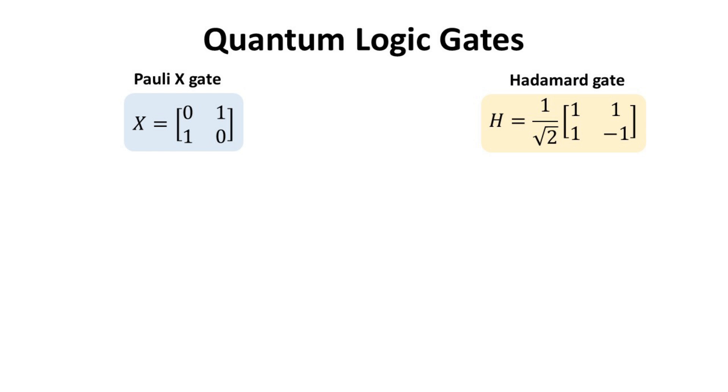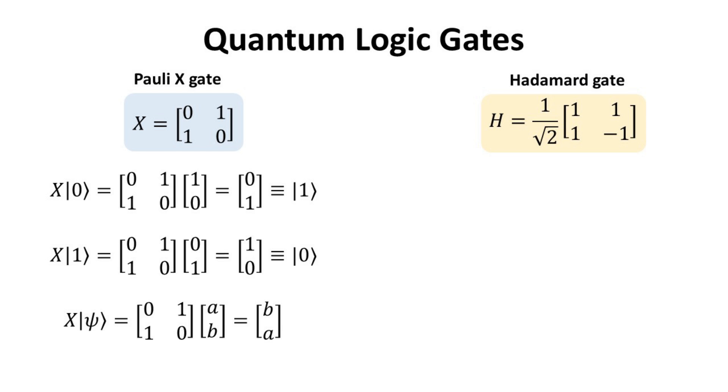Let's consider two of the most common quantum logic gates, the Pauli-X gate and the Hadamard H gate. Their matrix representation are as shown. We see that the action of the X gate on the 0 ket turns it into 1 ket. Thus, the Pauli gate is analogous to the inverter. For a general qubit psi, the X gate exchanges the complex coefficients A and B.